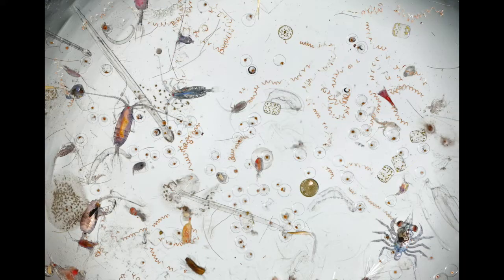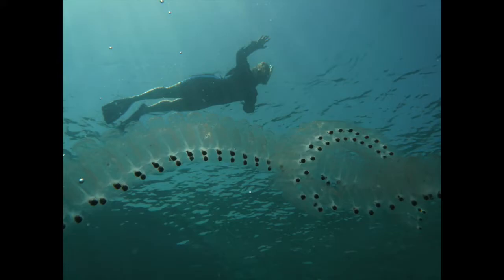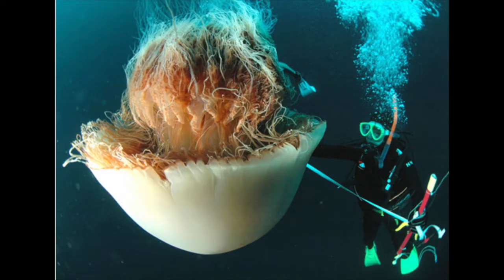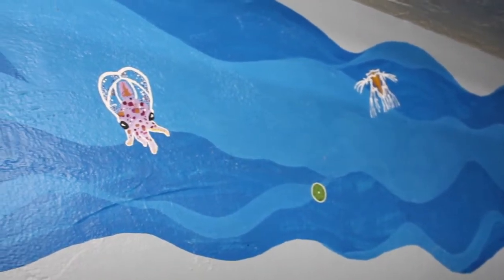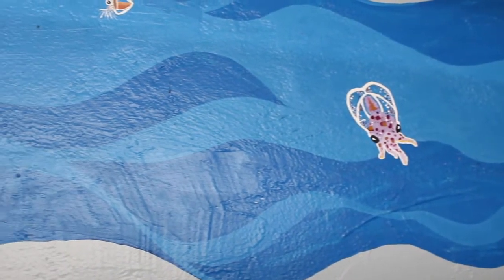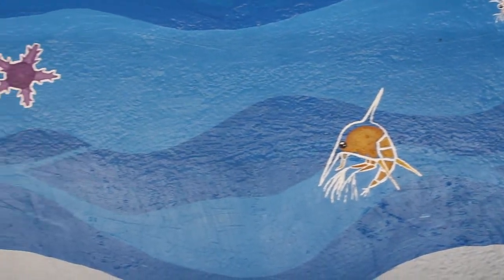When people think of plankton, they often think of tiny things that they would need a microscope to be able to see. But what if I told you that this is a plankton, and this is a plankton? Plankton comes from the Greek word planktos, which means drifting. So plankton are drifters — they cannot swim against the ocean's currents. They just have to go wherever the ocean pushes them.